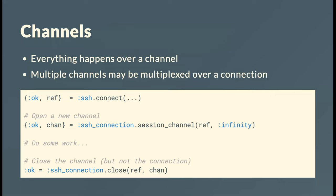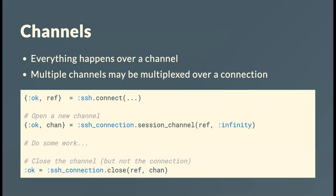SSH is a multiplexed protocol, which means it can carry multiple channels over the same TCP connection, and everything in SSH happens over a channel. You use the SSH module to get a connection, and then use session_channel to get an actual channel — it's just a number that increments each time you call it. When you close a channel, the underlying TCP connection represented by the reference is still active.